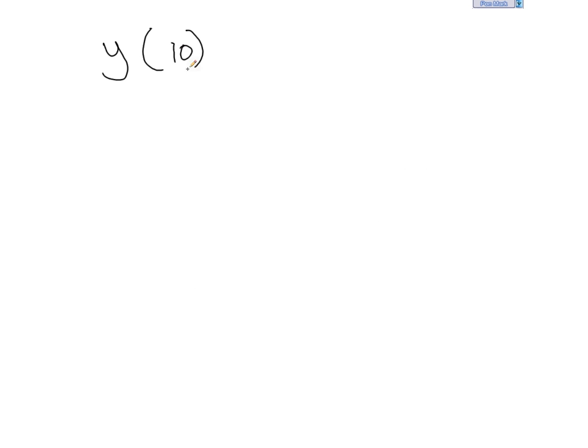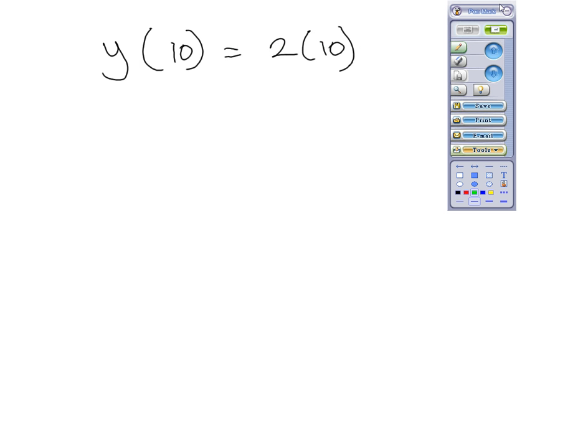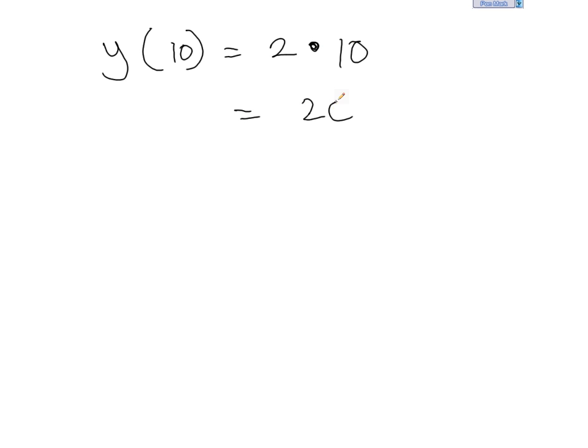I could also ask, what is y of 10? Which is not in our table, but I know that I could find the y value corresponding to an x of 10 by doubling that value. Again, sorry, I should probably just avoid using parentheses so that I don't confuse the multiplication. So 2 times 10 would say y of 10 is equal to 20. So an input of 10 gives me an output of 20. So here's the ordered pair.